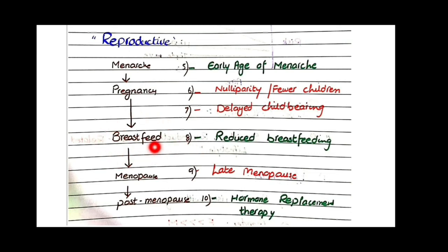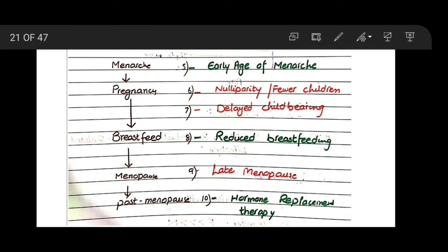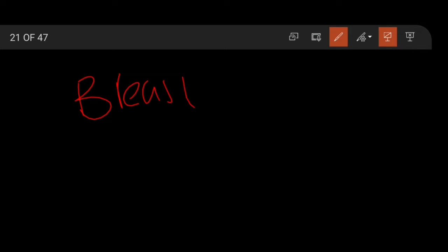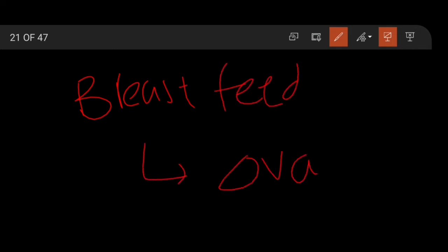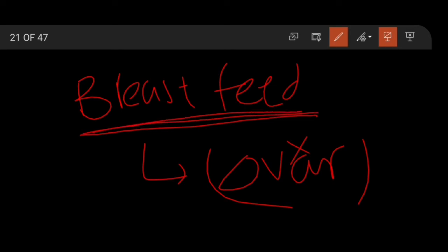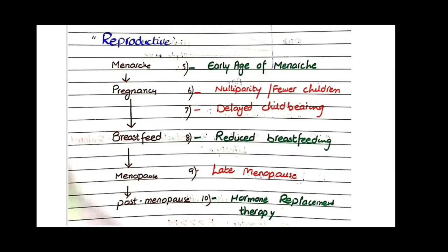Breastfeeding also reduces the risk of breast cancer. Women who do not breastfeed are at greater risk. During breastfeeding, the ovarian cycle stops, so stimulated follicles do not release estrogen — lower estrogen means lower breast cancer risk. If a woman does not breastfeed, the ovarian cycle continues normally, resulting in ongoing estrogen secretion from stimulated follicles, which increases breast cancer risk. Therefore, reduced breastfeeding is a risk factor for breast carcinoma.